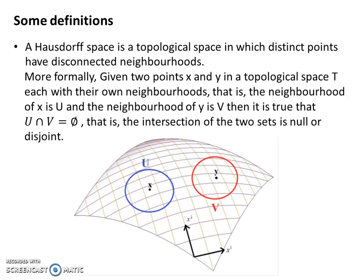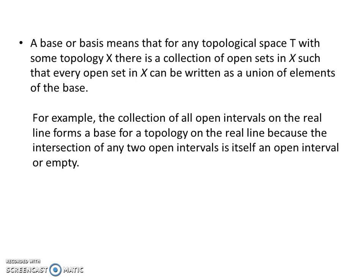Now for some definitions. A Hausdorff space is a topological space in which distinct points have disconnected neighborhoods. The diagram below shows two points X and Y in some topological space, each with their own neighborhoods: the neighborhood of X is U and the neighborhood of Y is V. The intersection of U with V is the null set, so these two sets are disjoint with no overlap.